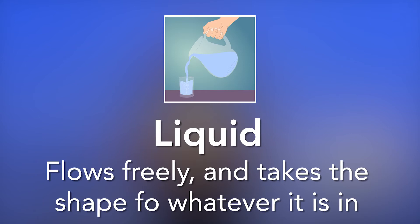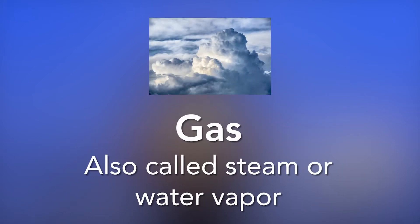Liquid is something that flows freely and it takes the shape of whatever it is in. We see this in juice, water, and anything else we drink. Gas is also called steam or water vapor. When the water boils, it will turn into water vapor. Think about when you cook noodles or eat anything hot — you see the steam from the food telling you that your food is hot.